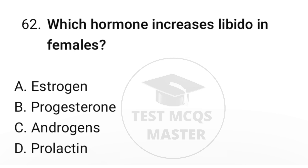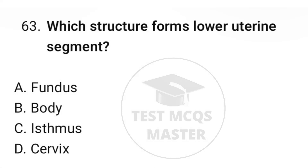Question number sixty-two: which hormone increases libido in females? The correct option is C, androgens. Question number sixty-three: which structure forms the lower uterine segment? The correct option is C, isthmus.